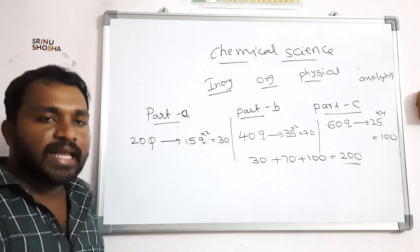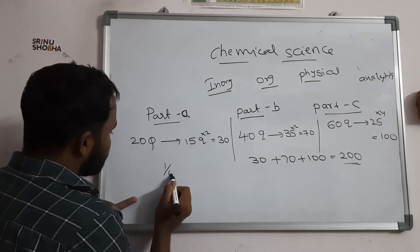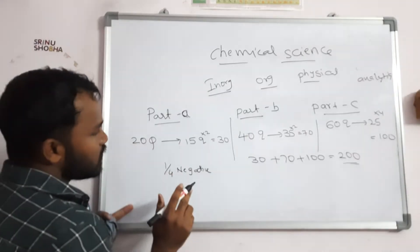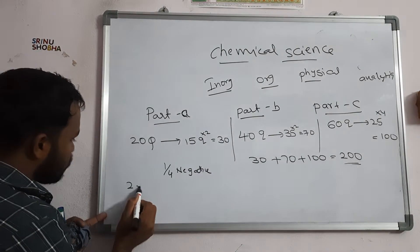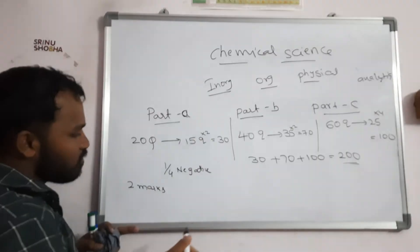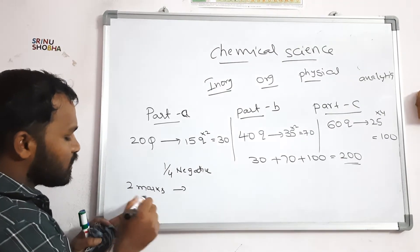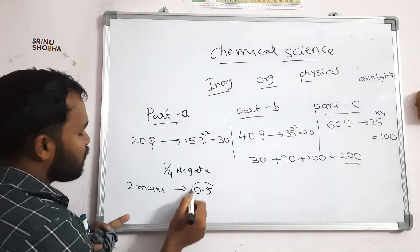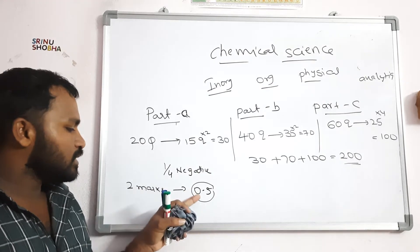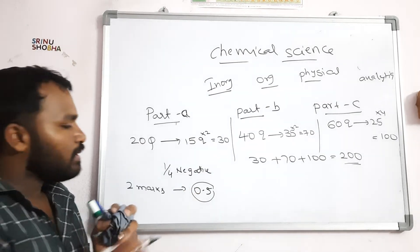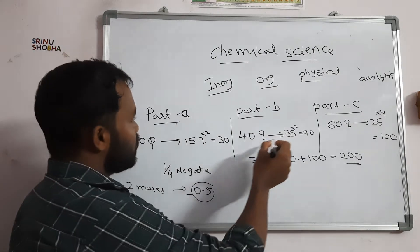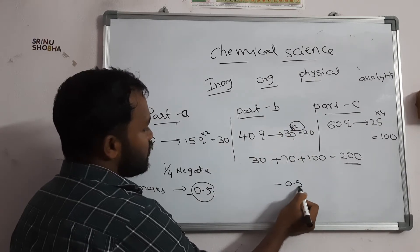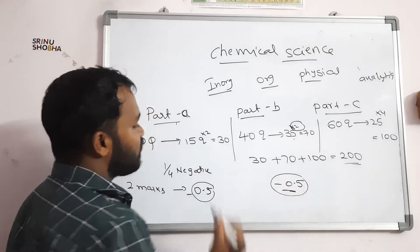In this exam, we have negative marking — 1/4 negative marking. For a 2-mark question, if you mark the wrong answer, you will get minus 0.5 negative marking. For a 4-mark question, if you get it wrong, you will get minus 1 mark negative marking.